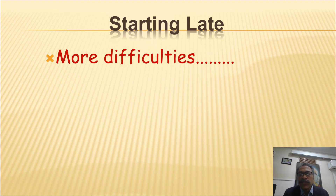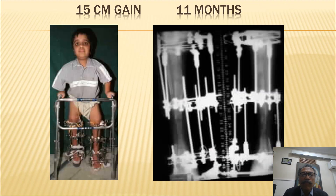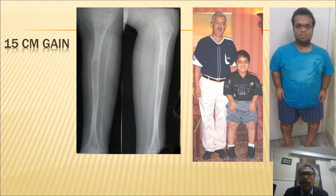When you start late, as opposed to early, there can be significant difficulties — as in the case of this 12-year-old who came from Kuwait. By that age they have become obese and also obstinate, having been teased a lot and made to feel inferior. Nonetheless, we managed to give him 15 centimeters of length gain in 11 months with bilateral double-level tibial lengthening, and he is now an entrepreneur at age 30. However, because he started late, he could not commit to also lengthening his femora and humeri, as societal and educational pressures in India do not permit extended time off during late high school and early college years.